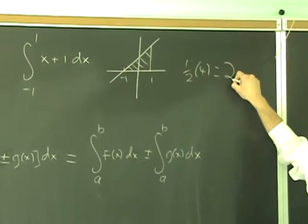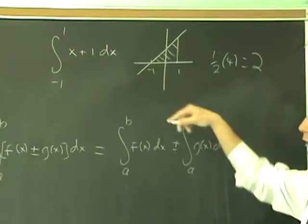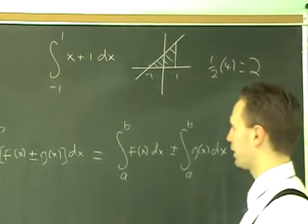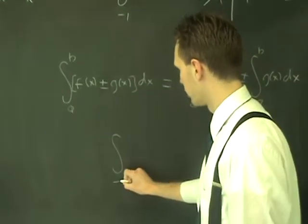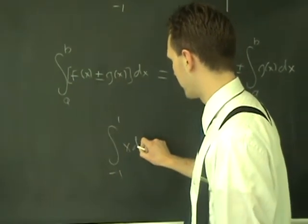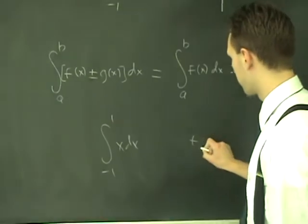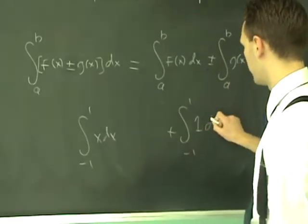You could have alternatively done that by breaking it up. I don't know how much easier it is, but it's good for an example. The integral from minus 1 to 1 of x plus 1 is the same thing as the integral from minus 1 to 1 of x dx plus the integral from minus 1 to 1 of 1 dx.